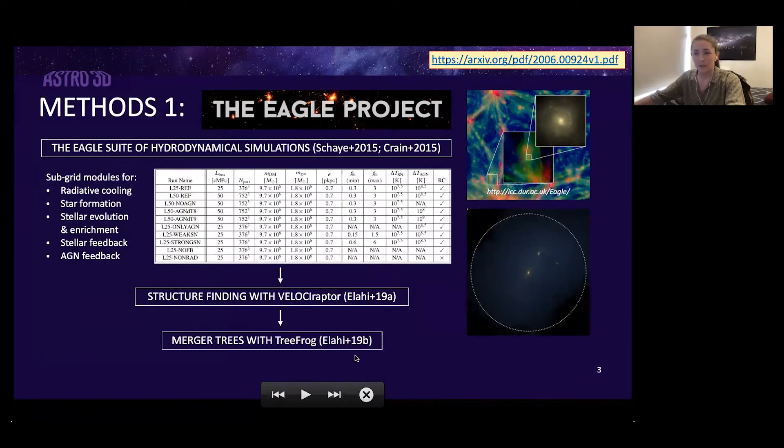To perform this study we use the EAGLE suite of hydrodynamical simulations. Without going into too much depth, EAGLE has a spatial resolution of order about one kiloparsec and below this scale uses subgrid modules for unresolved processes such as star formation, stellar and AGN feedback, as well as radiative cooling. We actually used a number of variations on the 25 megaparsec and 50 megaparsec boxes which are outlined on the table here on the slide, so we can see what happens to halo scale inflow rates when you switch on and off various baryonic physics.